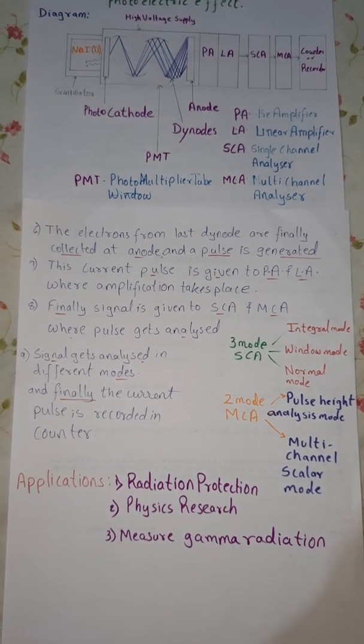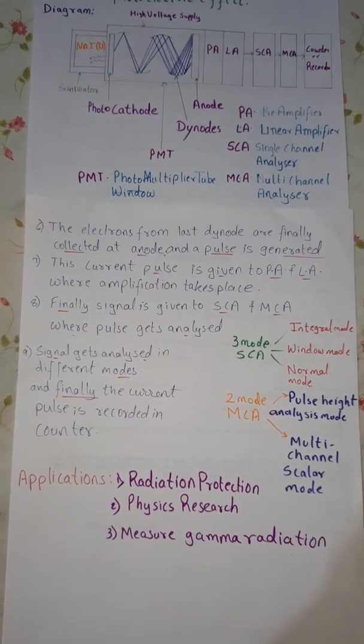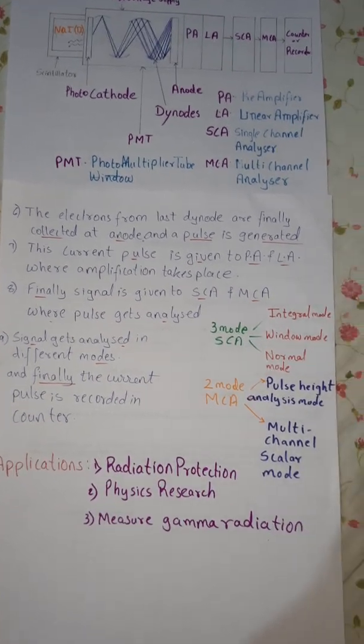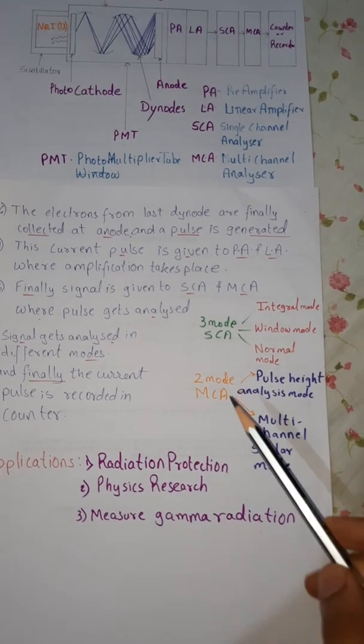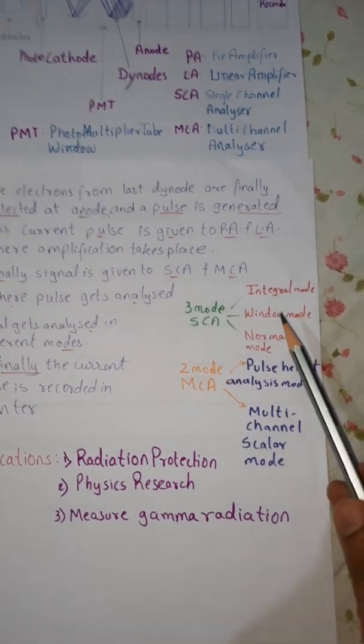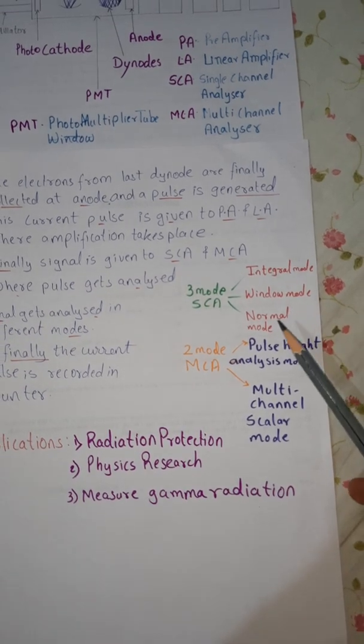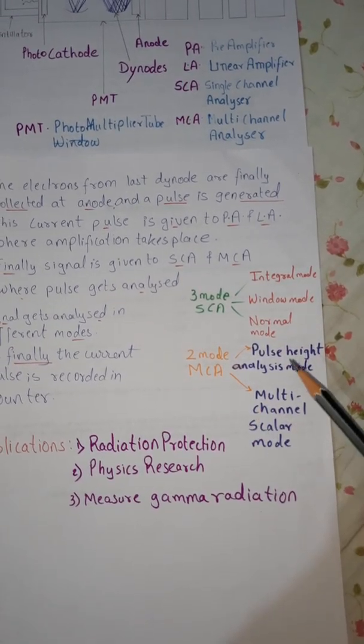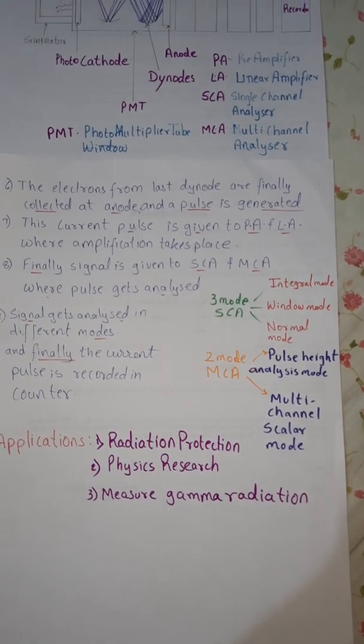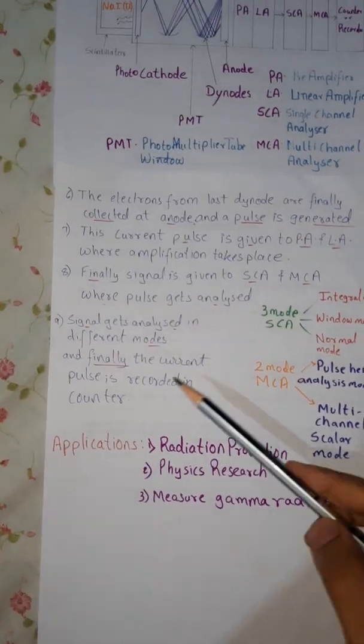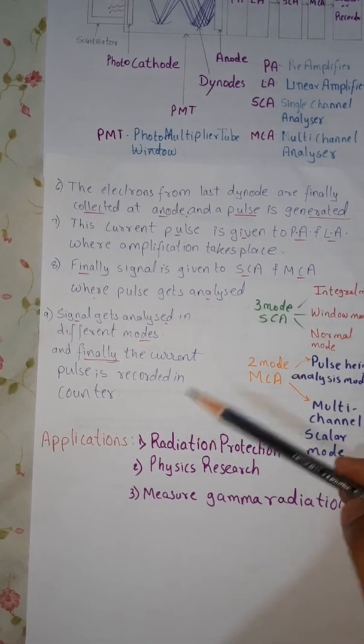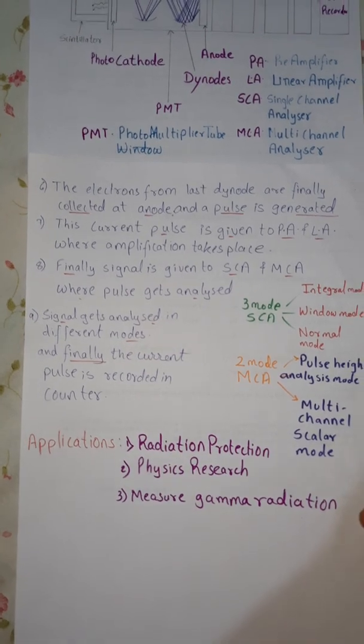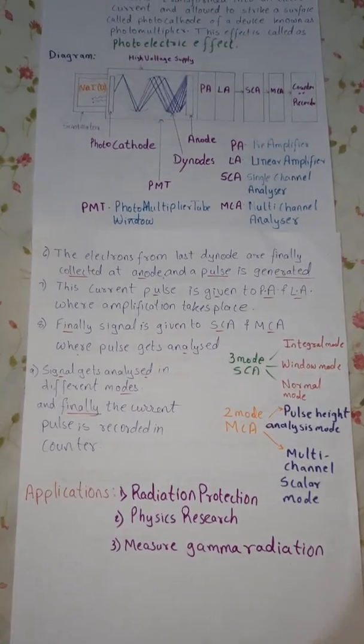The electrons from the last dinode are finally collected at anode and a pulse is generated. This current pulse is given to the amplifiers where amplification takes place. Finally signal is sent to the analyzers where pulse get analyzed. For SCA there are three types of modes: integral mode, window mode, and normal mode. For MCA there are two modes: pulse height analysis mode and multi-channel scalar mode. This signal gets analyzed in different modes and finally the current pulse is recorded in the counter.